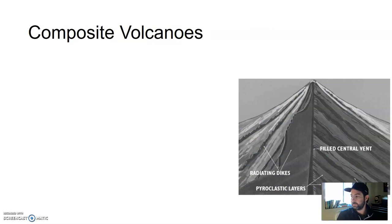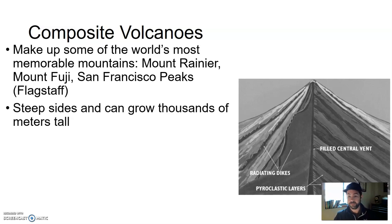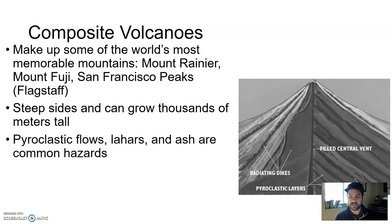Next size up, we get composite volcanoes. As mentioned, they make up some of the world's most memorable mountains — Mount Rainier in Washington, Mount Fuji in Japan. Heck, the San Francisco Peaks in Flagstaff — that is an old extinct composite volcano. These also have very steep sides and can be very, very tall. The types of hazards associated with them are pyroclastic flows, lahars, and ash.